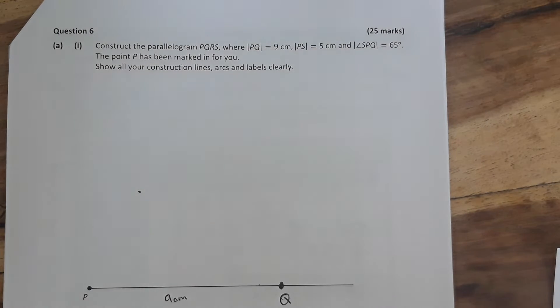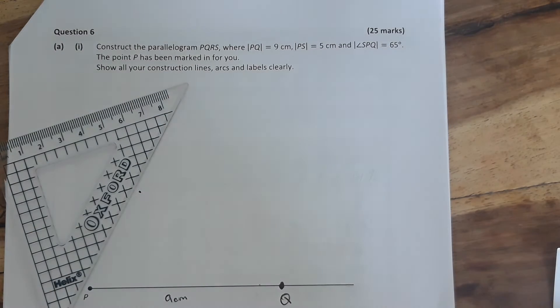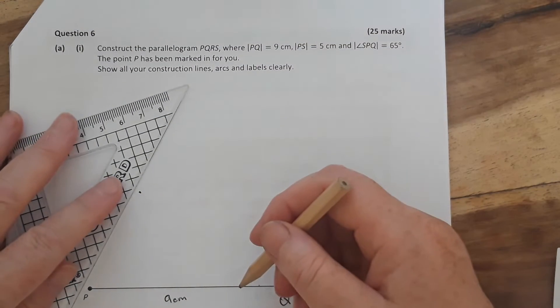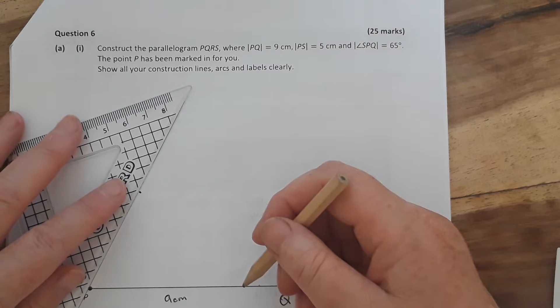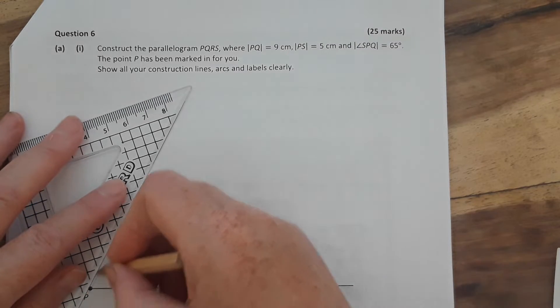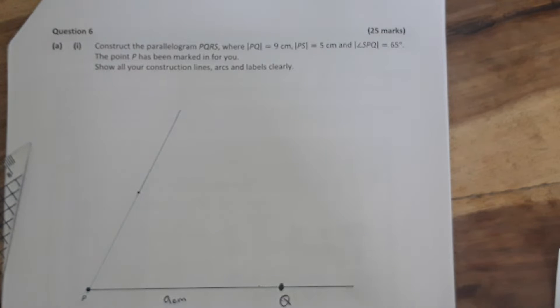So then I'm going to draw just a line straight up from there, and you're better to use pencils for this in case you make a mistake. So I'm just going to draw a line straight up. Now they want you to show your construction lines, so make sure you leave all your markings.